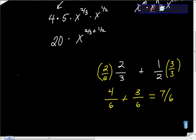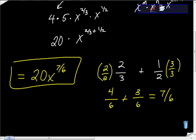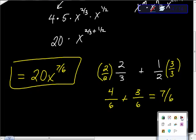So here's our answer: the new function is 20x to the seven-sixths power. We could write this in radical form, but this is a good enough answer. If you have any questions or comments, let me know. And if you haven't subscribed, please do. Thanks.